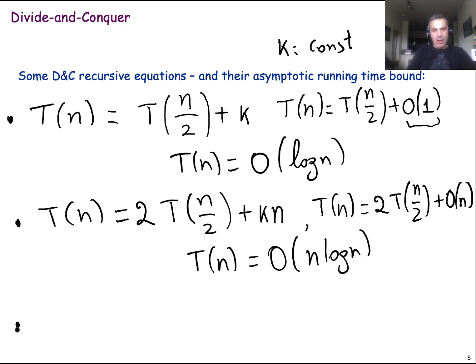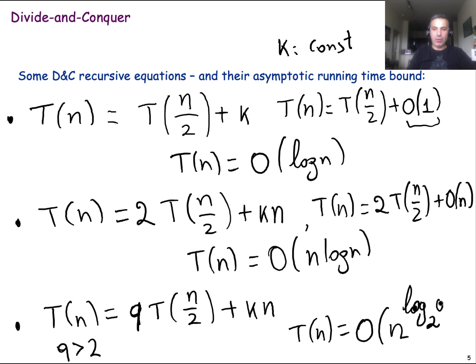Let me give you just one more. We will also see recursions in which you split your problem into, let's say, 9 sub-problems. This is 9, not Q, okay? Of, let's say, size n over two. And you, again, take some linear time to combine the solutions where this 9 is larger than two. In that case, we will show that the running time of this type of divide and conquer algorithms is big O n to the log base two of 9. So we will see algorithms that follow this type of recursions and we will also prove these solutions of the recursions in the next few lessons.